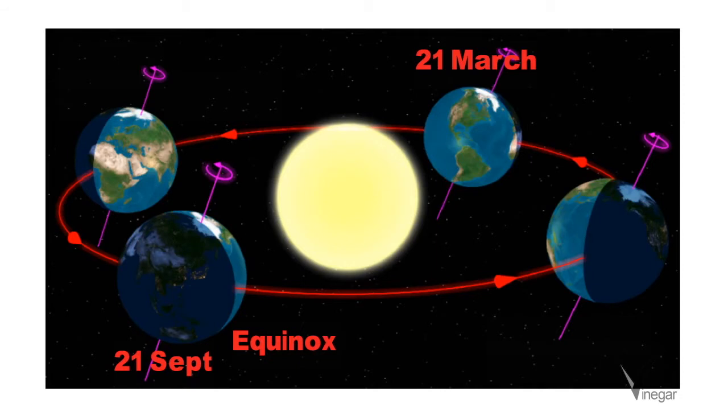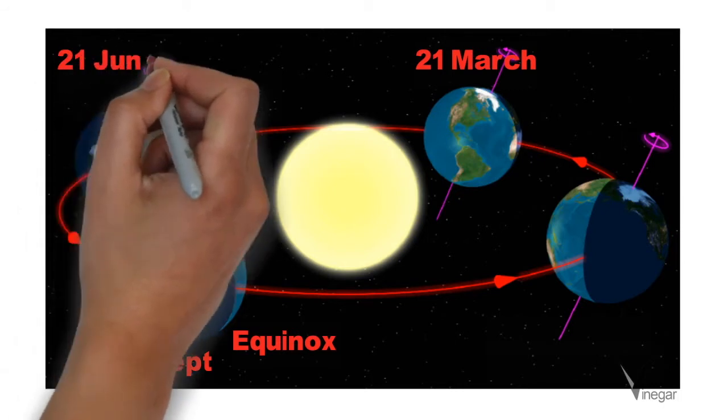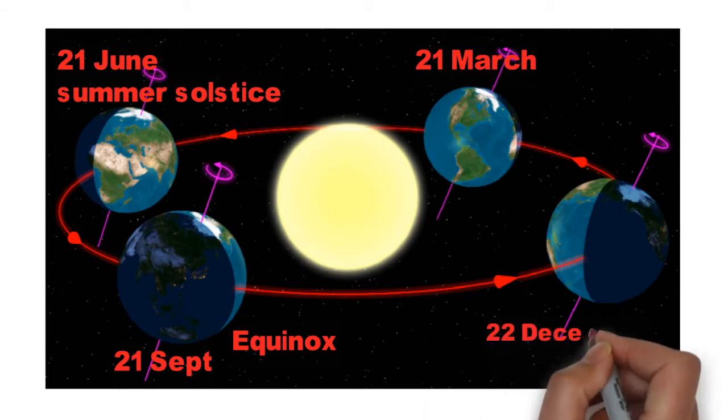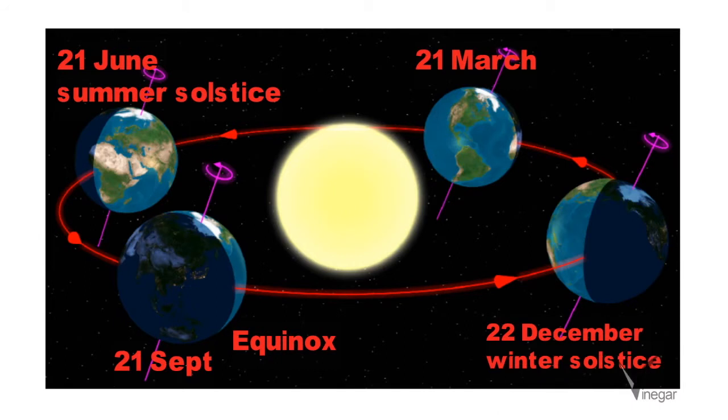After March, the sun is overhead at the Tropic of Cancer on 21st June, and it is known as June or summer solstice. Similarly, the sun is overhead at the Tropic of Capricorn on 22nd December. And this is called winter solstice.